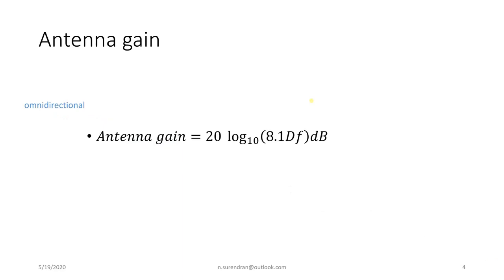What is an omnidirectional antenna? An isotropic antenna that radiates electromagnetic energy in all directions is called an omnidirectional antenna. Theoretically, the gain of an omnidirectional antenna should be 1.